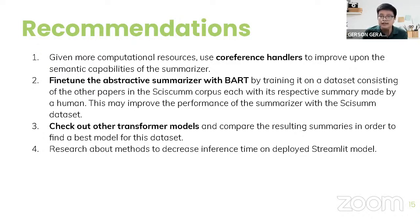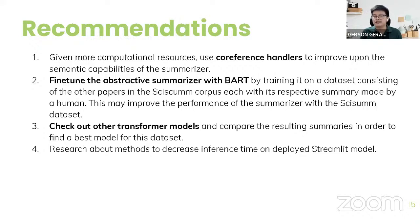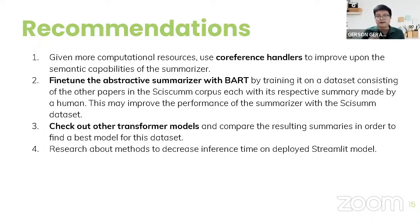The third recommendation is to check out other transformer models, as there are definitely more than BERT and BART, and maybe these models can be a better fit for this dataset. The fourth recommendation is to research methods to decrease inference time on the deployed Streamlit model — what's happening right now is that once we click 'Summarize' it loads the pre-trained weights, which takes time. One idea is to put the weights in a database and retrieve them from there rather than downloading them each time.